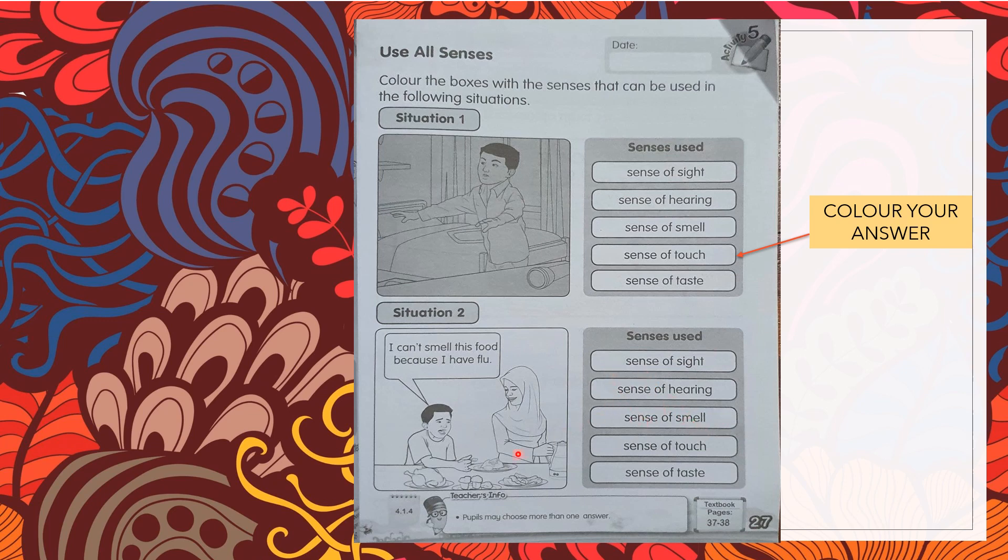Okay, sense of sight, yes. Dia dapat melihat makanan itu. Jadi, dia boleh gunakan sense of sight. Sense of hearing, no. Dia tidak dapat mendengar. Tidak ada bunyi pada makanan. Sense of touch, yes. Dia boleh menyentuh makanan itu. And sense of taste, ya. Dia boleh lagi merasa makanan itu masinkah, maniskah, dan sebagainya. Kerana yang dia tidak dapat berfungsi tadi adalah deria bau, deria menghidu.